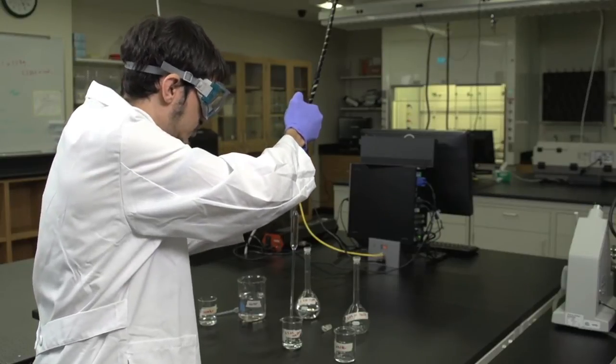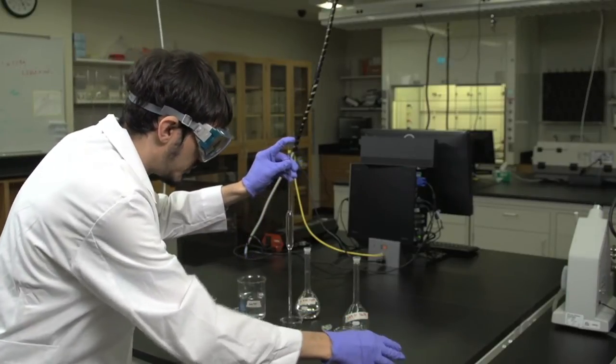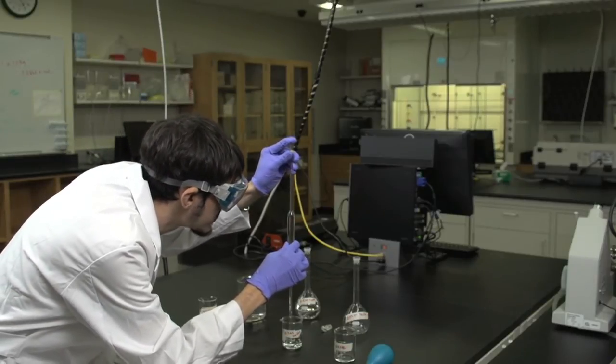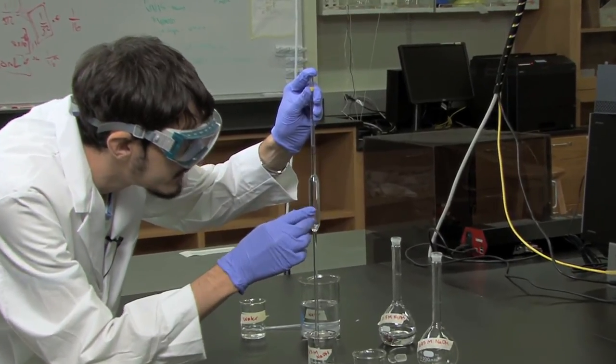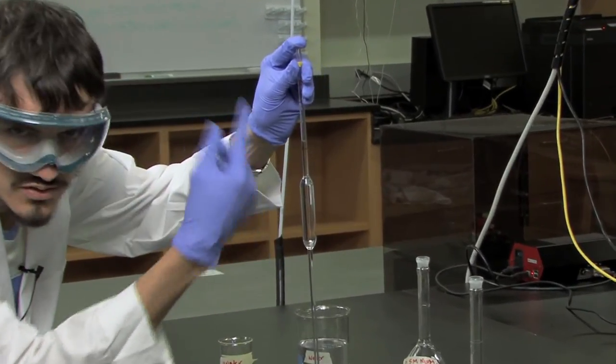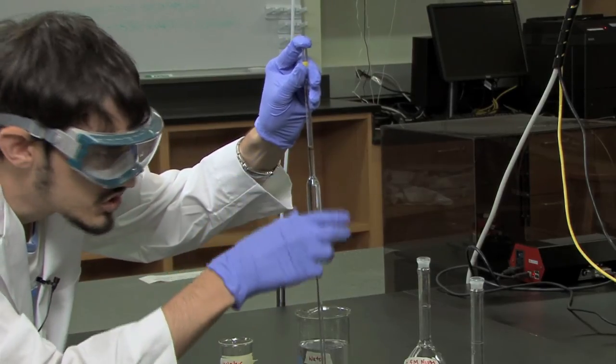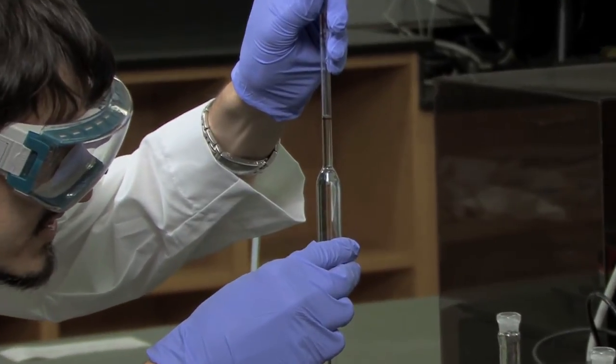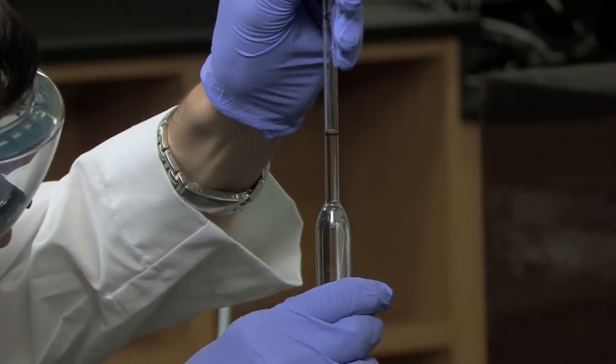Once the solution is above the mark, put down the bulb and place your finger above the mark, and ever so slightly remove your finger to allow atmospheric pressure to return to the system. The level of the solution will drop, and you want to make sure that the meniscus rests just upon the line.